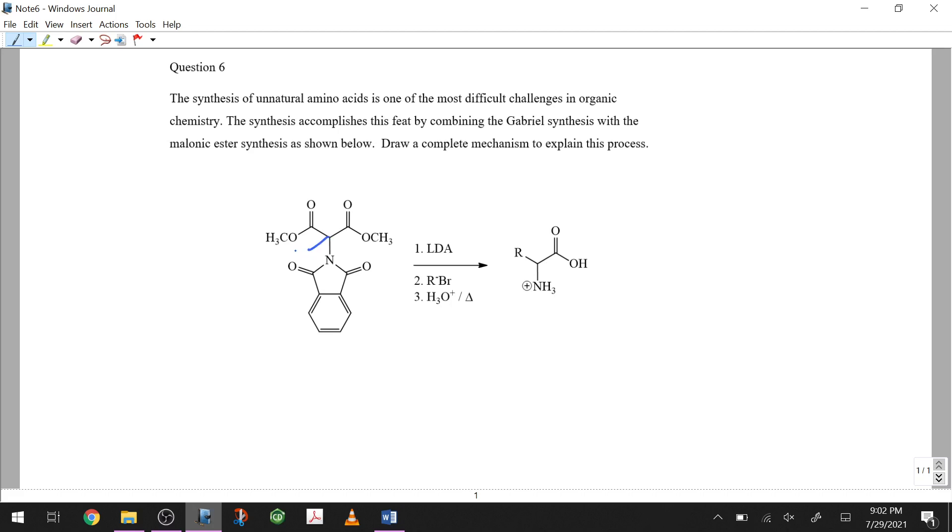So first, enolate formation. We have our amine base deprotonating that, forming an enolate. So that puts me here. I have a negative charge there. I have my nitrogen here. I'm just going to draw a circle to indicate the rest of that. We don't need it for a second.